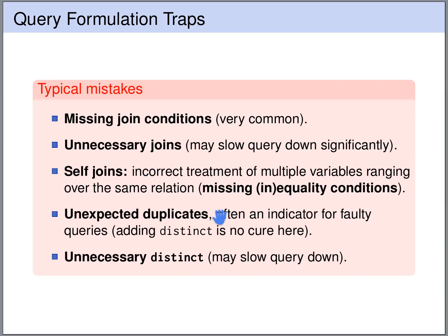Unexpected duplicates in the result are often a sign of a mistake, so you should take the time to understand why you see duplicates. Only if you understand why you see them should you possibly eliminate them using DISTINCT. You should also avoid using unnecessary DISTINCTs, because they hide mistakes and may slow down your query.